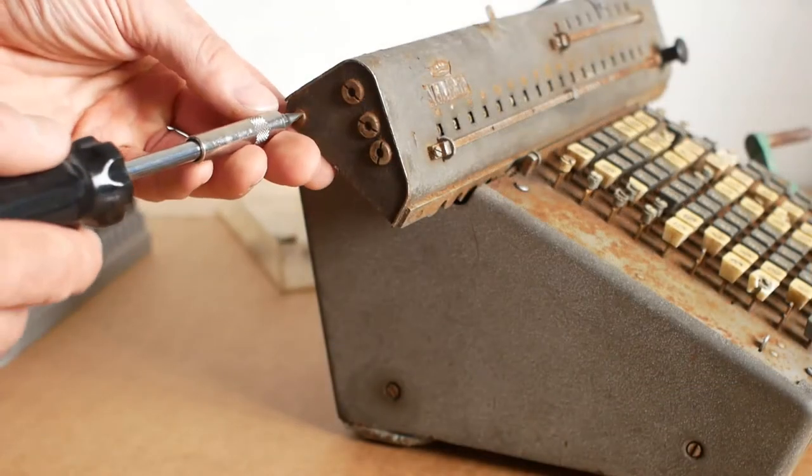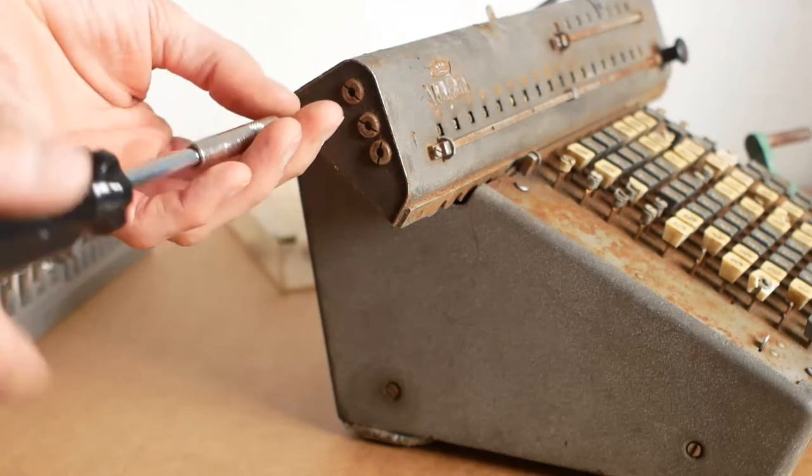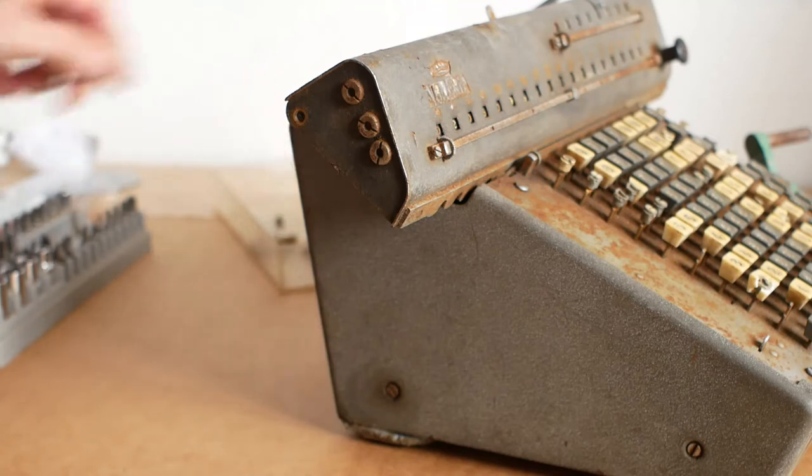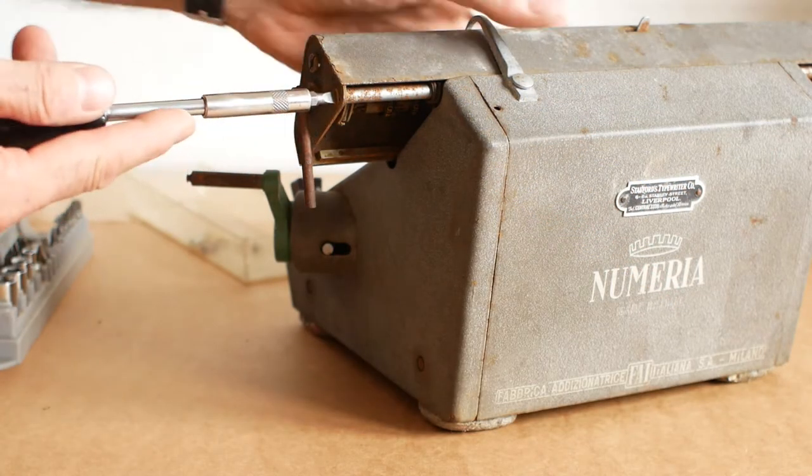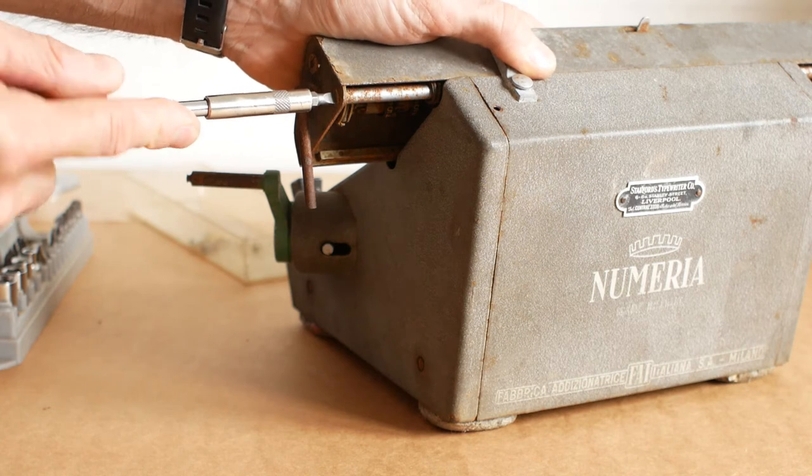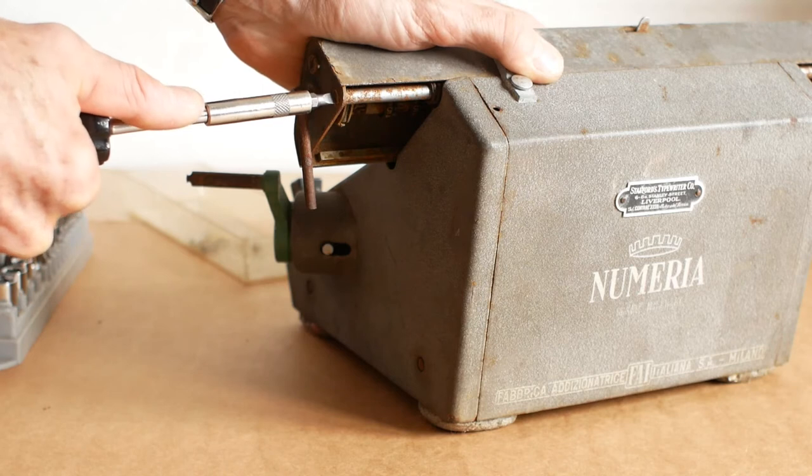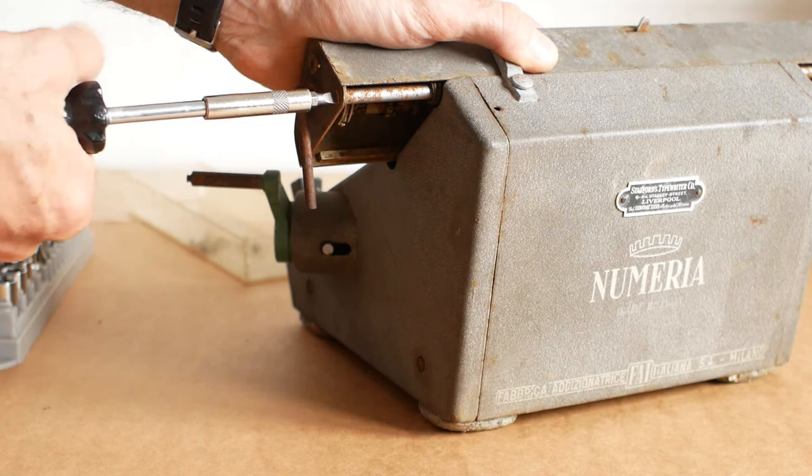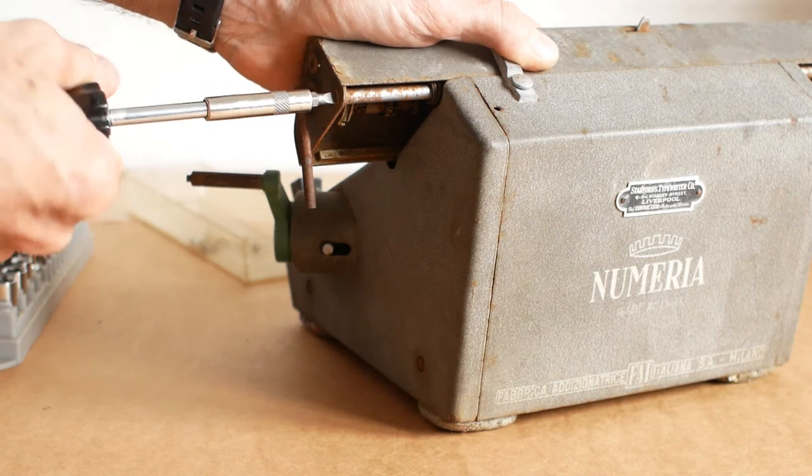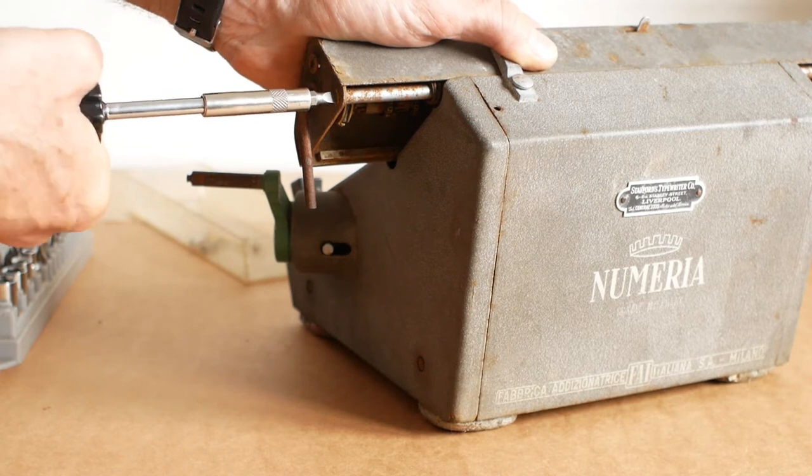So I'll unscrew the retaining screw on the left hand end and so far so good that came out nice and easily. Next I'll see if I can rotate the rod to free it up a little. And no, it really doesn't feel like that's going to budge at all. I don't want to give it too much force because breaking it really won't help. So I think I'll give up at that and put a bit of penetrating oil on it and leave it for a while.